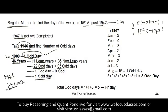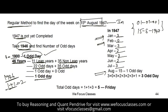Now calculate from 1947 up to 15th August. January: 3 odd days. February: 0 odd days. March: 3. April: 2. May: 3. June: 2. July: 3. August up to the 15th: 1 odd day. All these month odd days add up to 3 odd days. So the total odd days are 1 plus 1 plus 3, which equals 5.